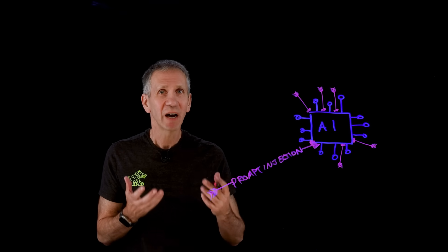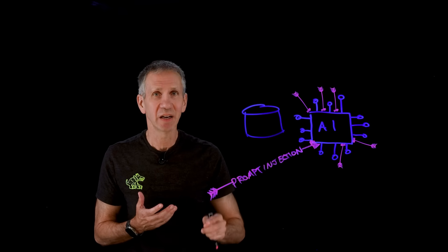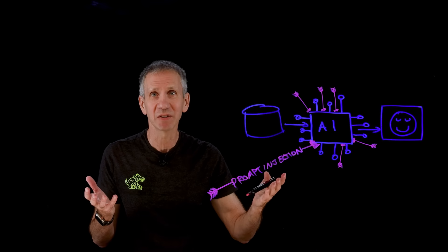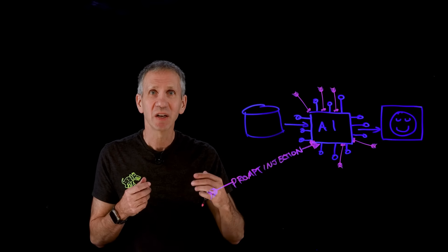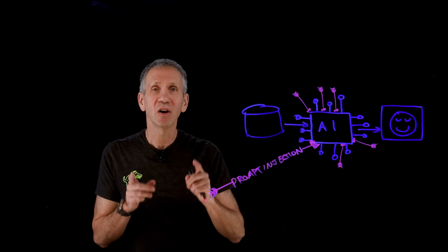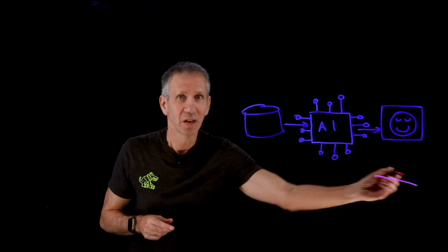In previous videos, I've talked about the importance of securing the data, securing the model, and securing the usage of the generative AI system. Prompt injections attack the usage. In this video, we're going to zoom in on the usage-based attacks and take a look at how we can defend against a wide range of these threats in order to make LLMs better able to withstand the onslaught.